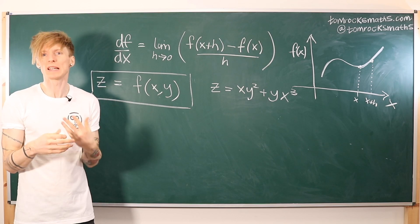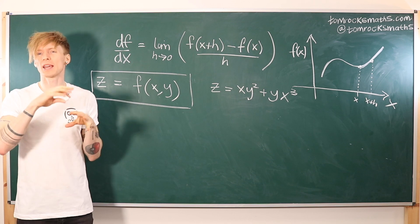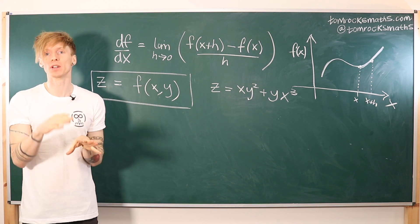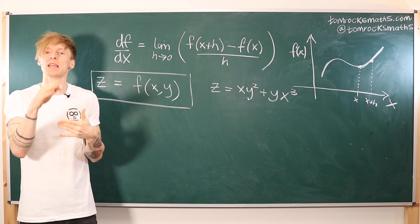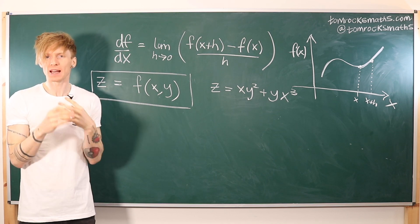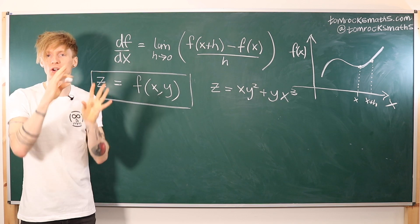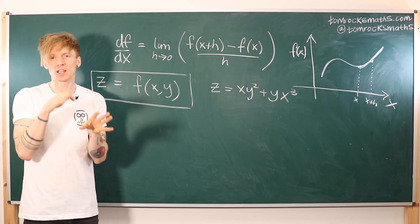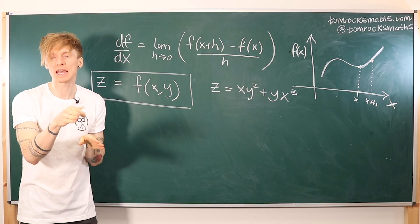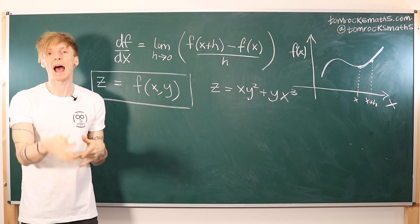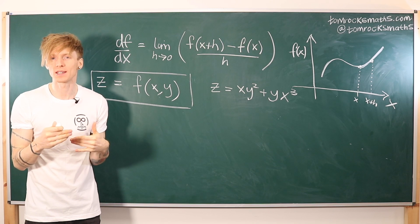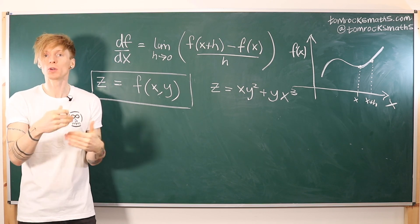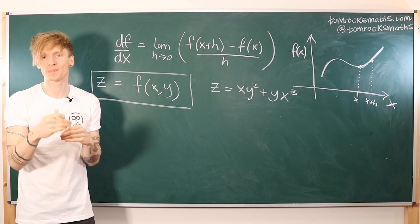What partial derivatives really do is allow us to calculate the rate of change for a given direction. The x partial derivative tells us how our function f of x, y changes specifically moving in the x direction, and then the y partial derivative tells us how our function changes if we move in the y direction.